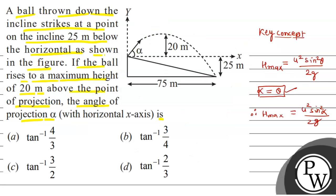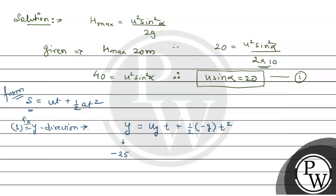So the displacement in the y-direction is −25 meters. Here u_y is the sine component, i.e., u·sinα, and we substitute its value from equation 1 which is 20. So: −25 = 20t + ½(−10)t². After simplification, this gives −25 = 20t − 5t².